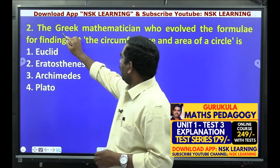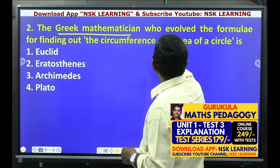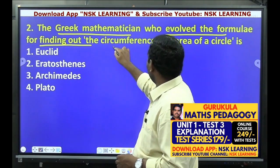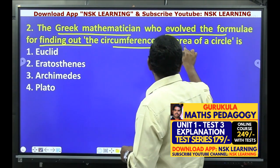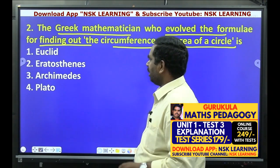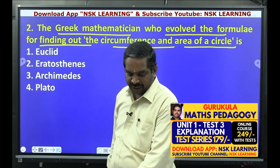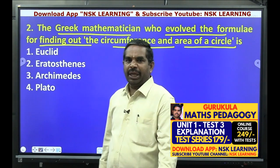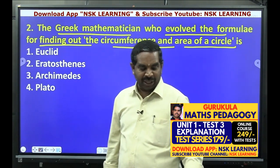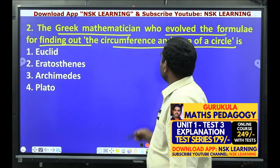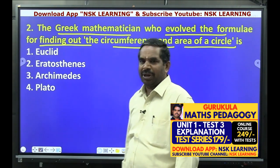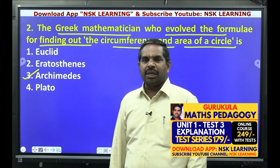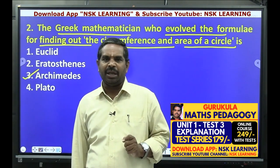The Greek mathematician who evolved the formula for finding out the circumference and area of a circle. Circle yoke area and perimeter.